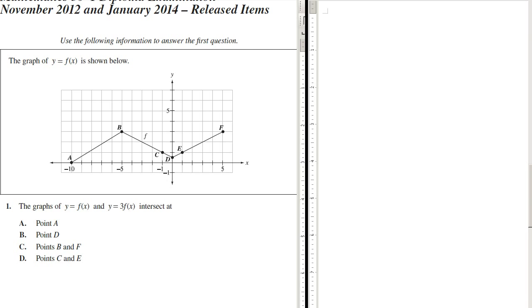So in other words, it's the only point that f(x) and three times f(x) would share is this point, A. Because it doesn't move. All the other ones move upward. And there's no other intersection points. So the answer has to be A.